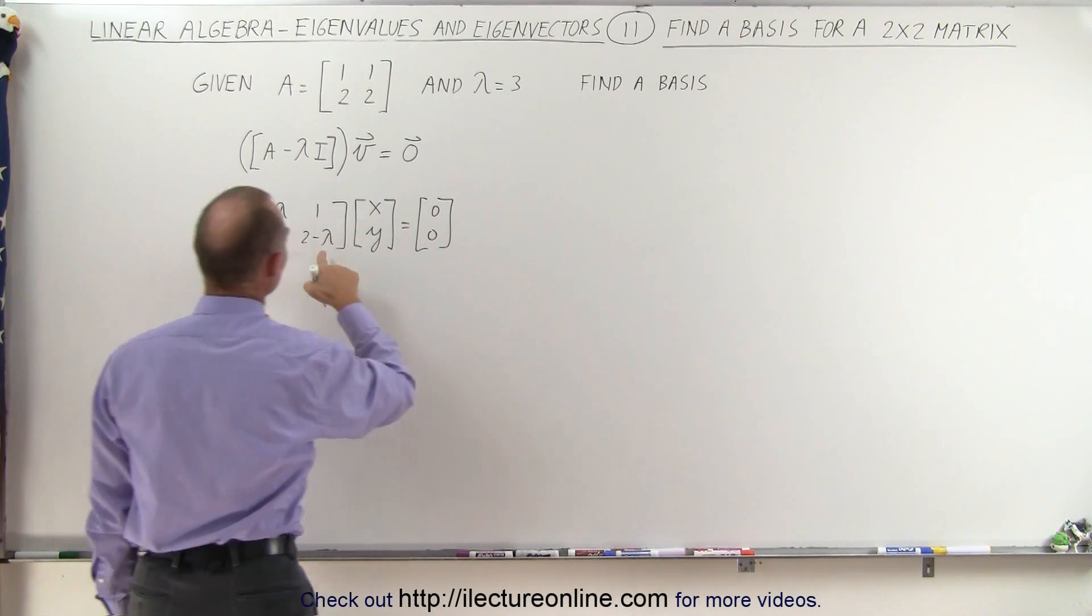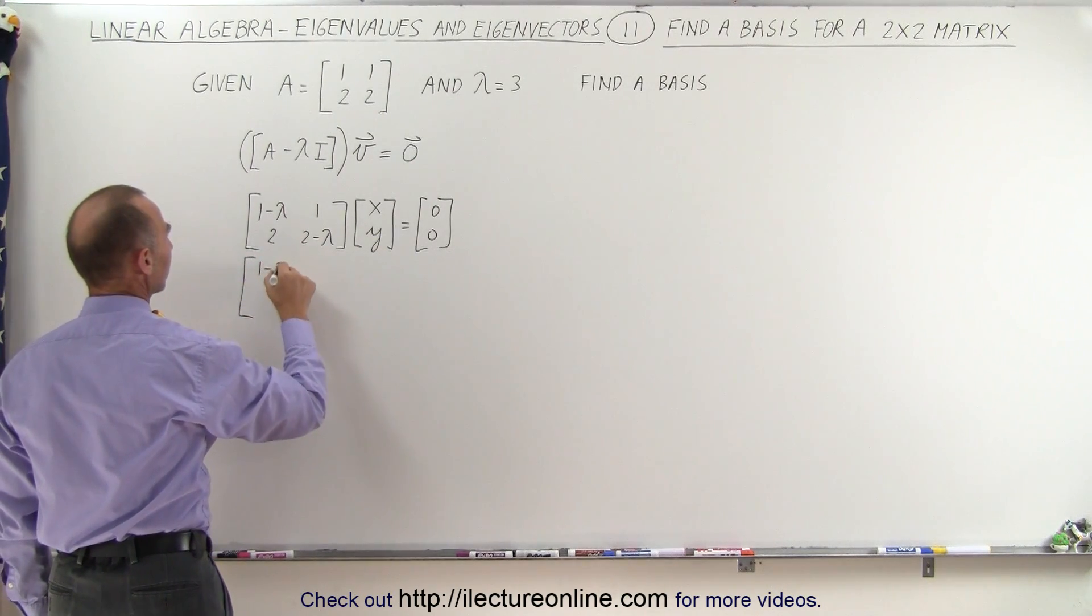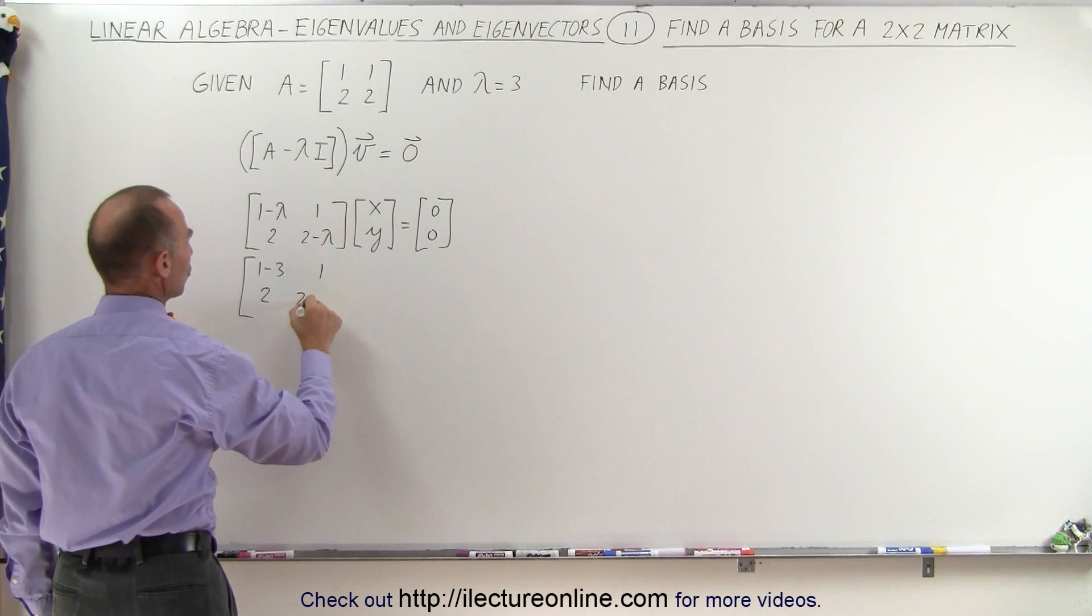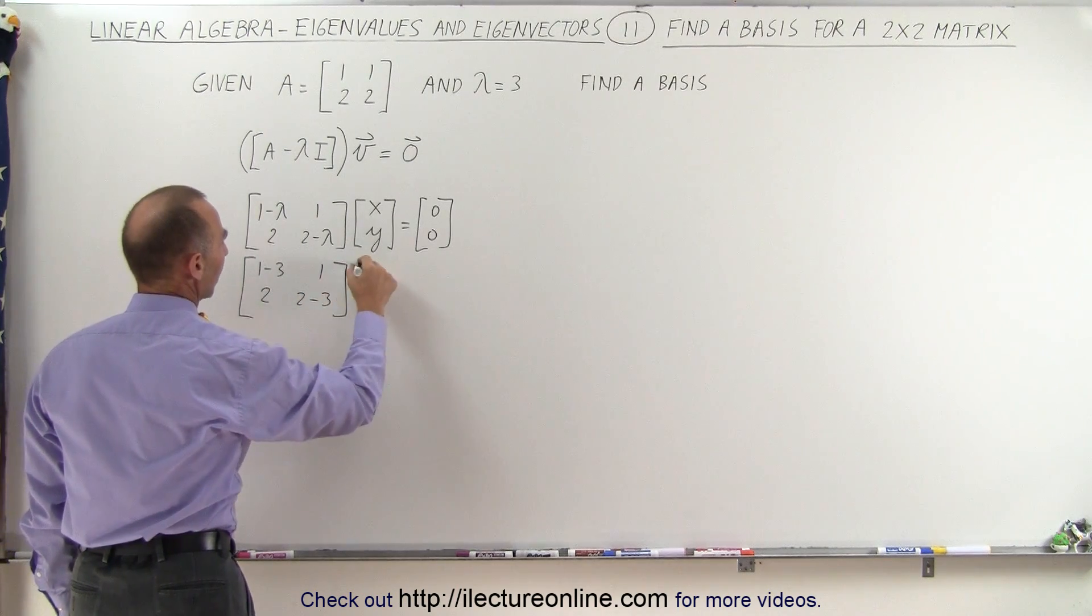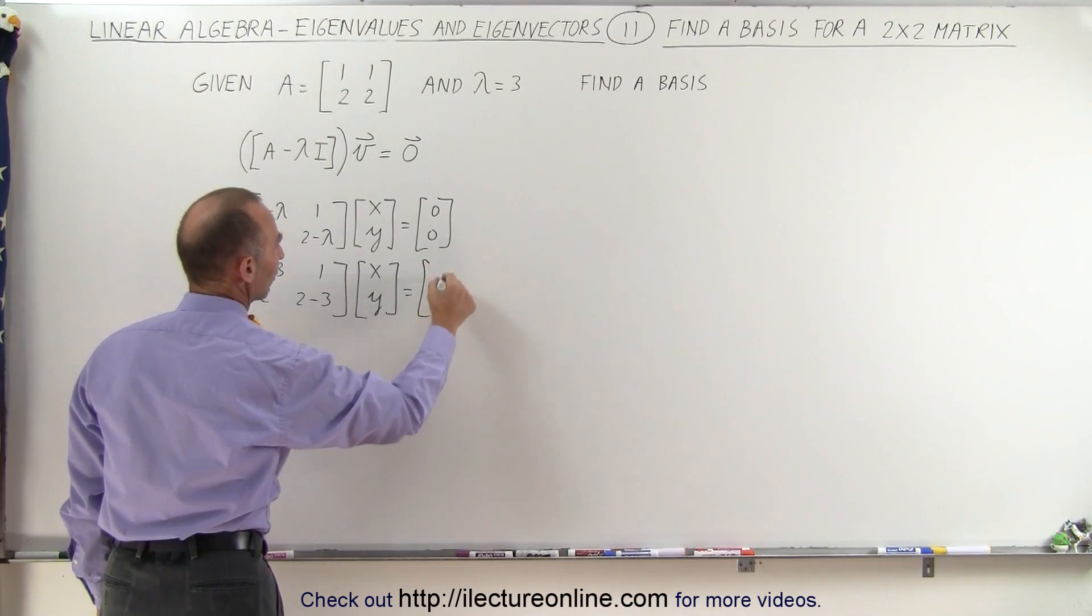And since here they give us the value for lambda, the lambda is equal to 3, we can then say that's equal to 1 minus 3, 1, 2, 2 minus 3, multiply it times x and y, that should give us the zero vector.